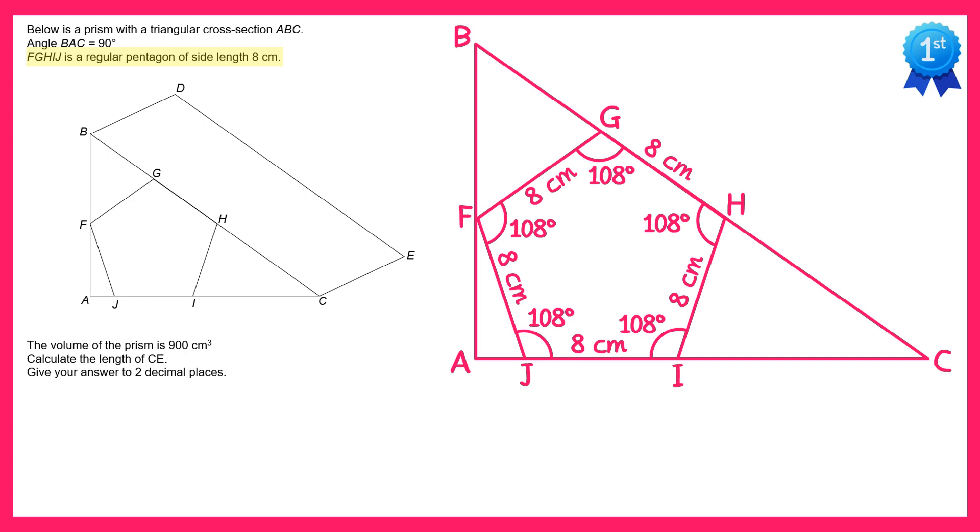There are also some exterior angles we can see on here. They must all be 72 degrees. Next we can find the angle AFJ, that's this one here. Since we have a triangle AFJ we can subtract 72 and 90 from 180 to get this angle at 18 degrees.